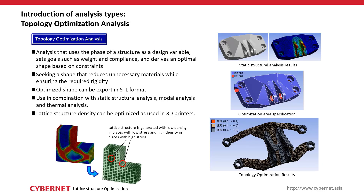Topology optimization allows you to optimize your components by removing material from the original design. The compliance of the structure is evaluated initially, and then material in regions that serve no structural purpose is removed — eliminating over-designed regions. This ultimately reduces the weight of your product and removes waste from your design.